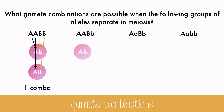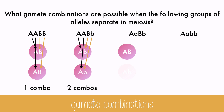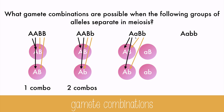With this group of alleles, there must be a capital A, but there could be a capital B or a lowercase b. So in this case, there are two total gamete combinations. In this allele group, both genes are heterozygous, which will give us the maximum number of combinations. There could be a capital A with a capital or lowercase b, or a lowercase a with a capital or lowercase b. This gives us four possible combinations.